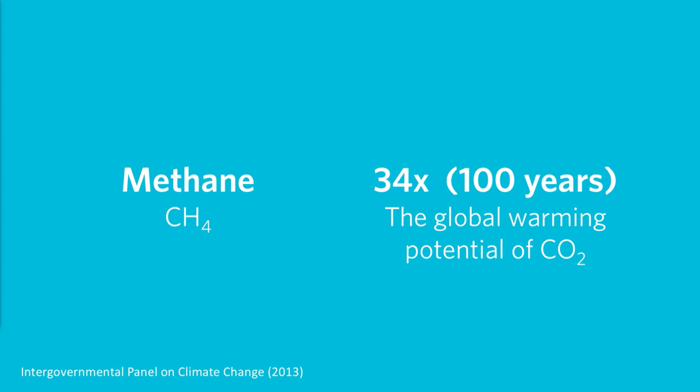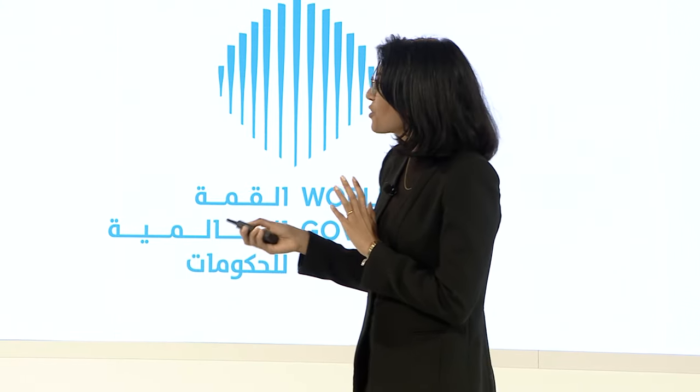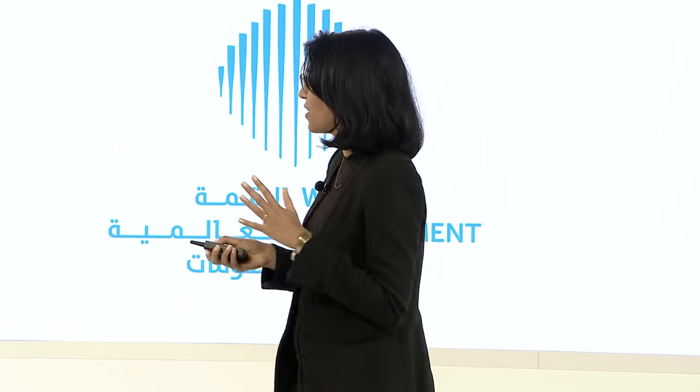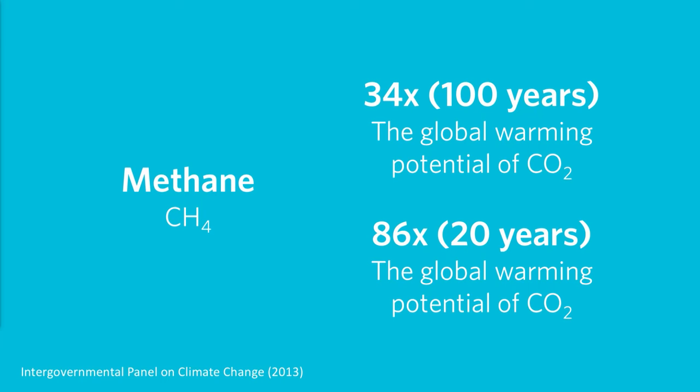An important aside: the way methane is calculated as a greenhouse gas matters a lot. That 7.1 gigatons figure assumes methane has 34 times the global warming potential of carbon dioxide over a 100-year timescale. But I think a hundred years is too far into the future. Because methane starts to dissipate from the environment at around 12 years, if we look at a 20-year timeline, methane actually has 86 times the global warming potential of carbon dioxide. So that 7.1 gigatons figure is actually quite a low estimate of the environmental impact of animal agriculture.